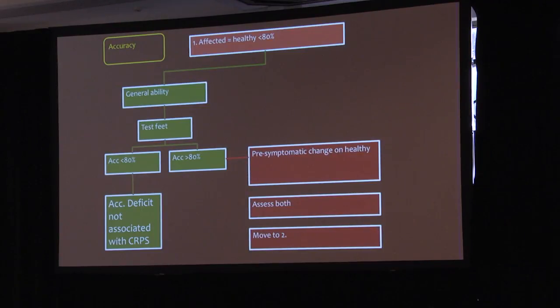So this is my attempt at a quasi-clinical treatment rule or clinical reasoning tool. I'm slightly nervous about it, but let's say you do the left-right judgment task and you see that the affected limb is no different to the healthy limb on your criteria, but they are both worse than 80%. What does this mean?